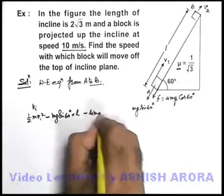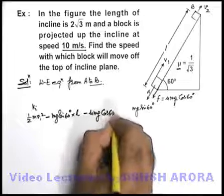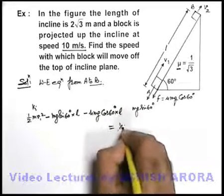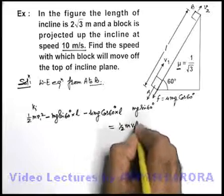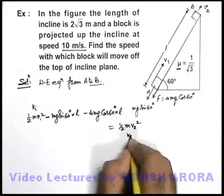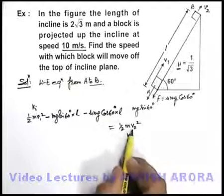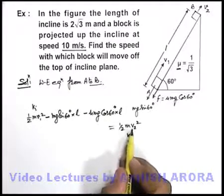Minus μ mg cos 60 degrees into l. This is equal to the final kinetic energy of the block that is half m v2 square. This is the final kinetic energy at the top of the incline. So we are here required to find the value of this speed v2.